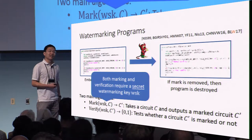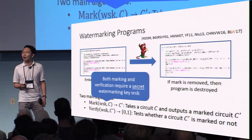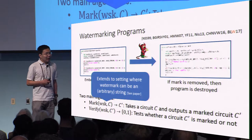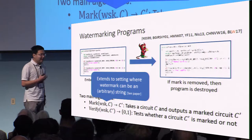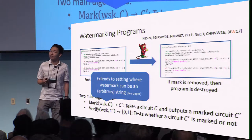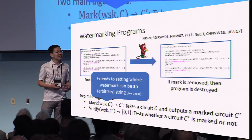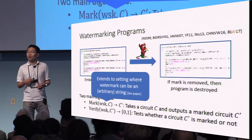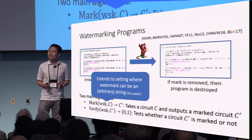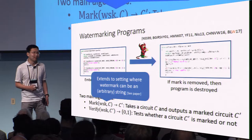In this work, we consider the secretly verifiable version of watermarking, where both the marking and verification algorithms take as input a watermarking secret key, denoted WSK. In the simplified description here, I am only considering the case where the watermark consists of a Boolean flag — either a program is marked or it's not marked. All of our notions naturally generalize to the setting where the watermark can be an arbitrary string such as a name or product ID, but for simplicity in this talk I'll just consider the Boolean flag scenario.